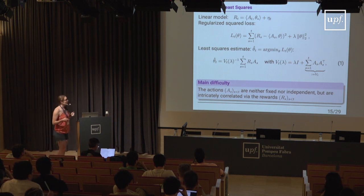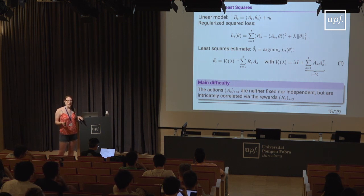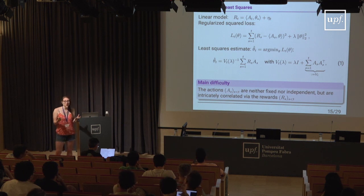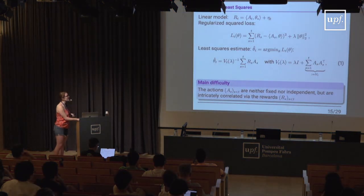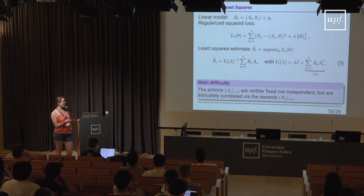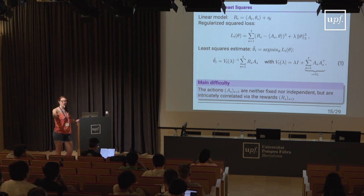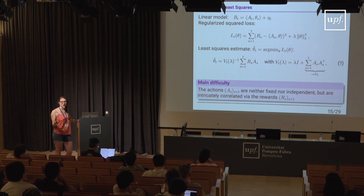This gives us an estimator of θ* with some directional uncertainty. The problem is that the design is random — at every round the pulled action depends on everything observed so far, creating a dependent sequence. This prevents using standard iid concentration theorems, so we need to work harder to get the concentration inequalities needed for the confidence bounds.